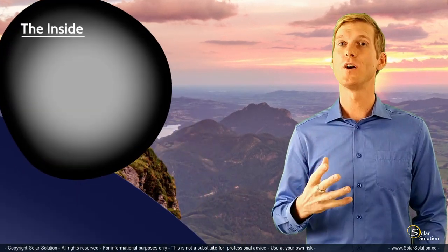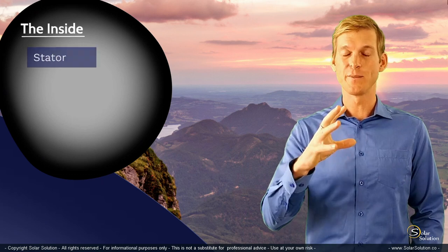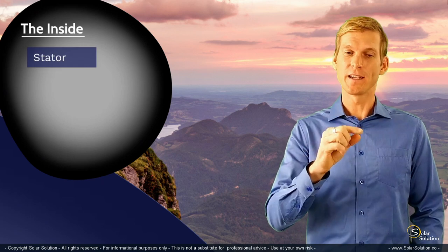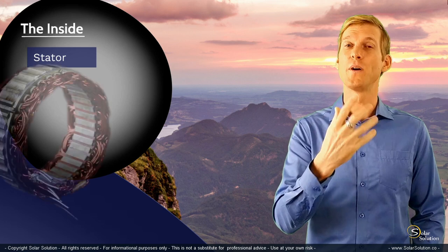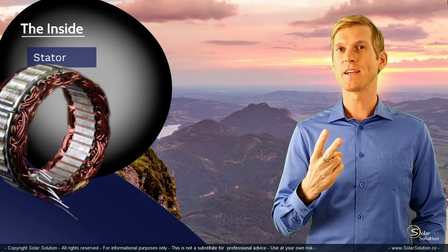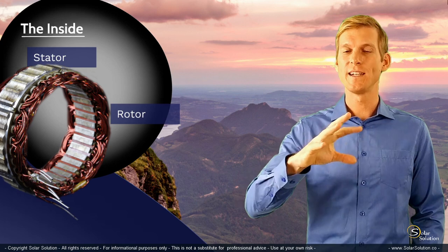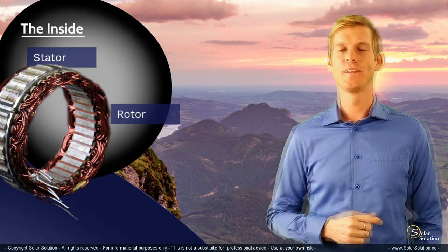What are the main components of an alternator? Well, the first one is the stator — it's something that stands still, and it consists of a whole bunch of wires wound up in a certain way. The second main component is the rotor, something that rotates inside of the stator.